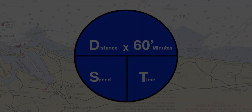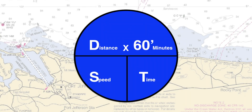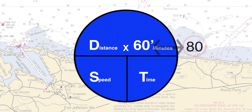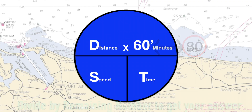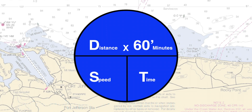The reason this is so important is that when using 60 D Street, there will always be two numbers in the formula that are side by side that you must first multiply, and then take that answer and divide it by the remaining number which lies above or below the two numbers that you just multiplied.